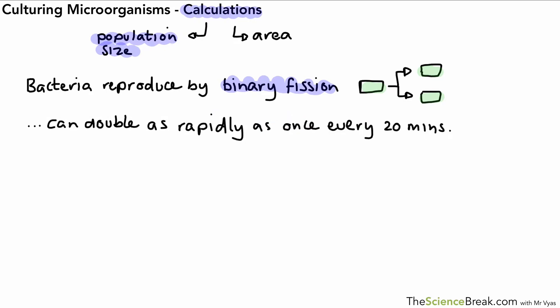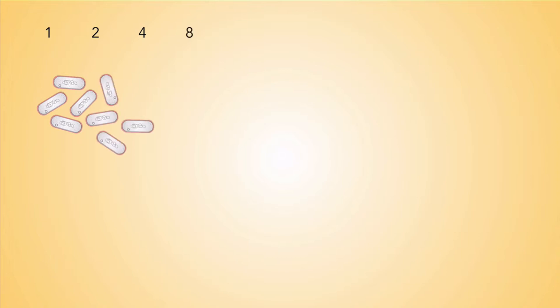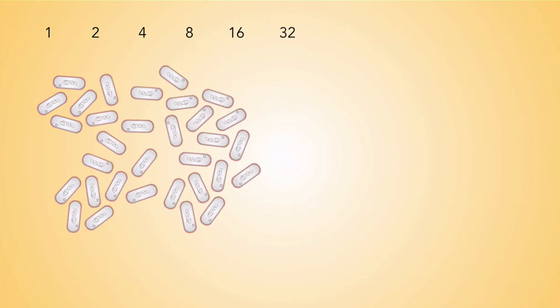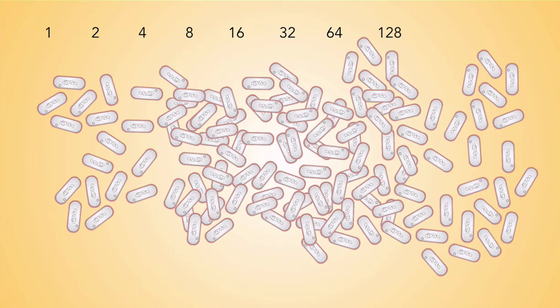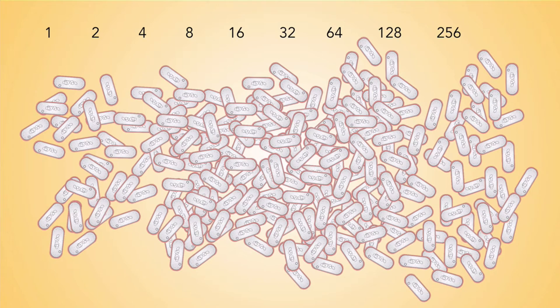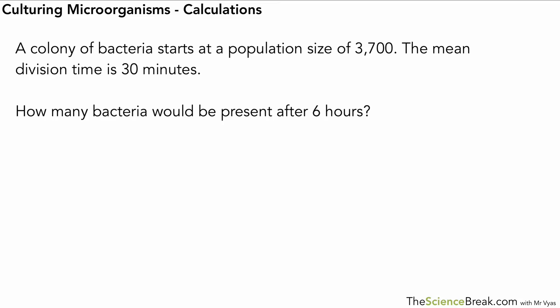Let's have a look at what that might look like. Here I've got one bacterium that reproduces by binary fission into two. Each one of those divide and we have four. As you can see, we rapidly grow in number. We've just done a few doublings, but you can see how quickly the numbers increased.